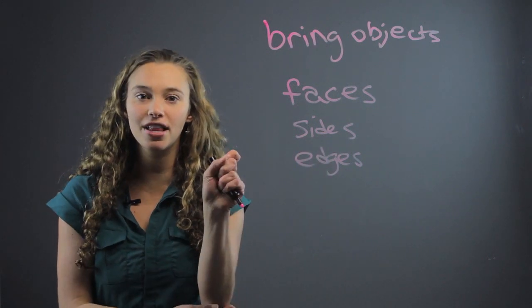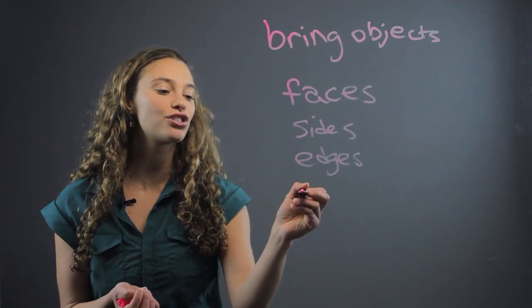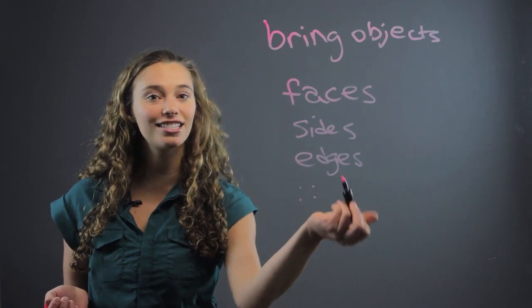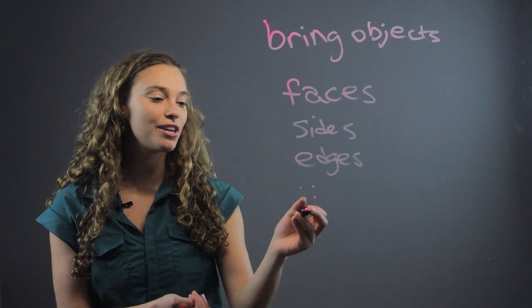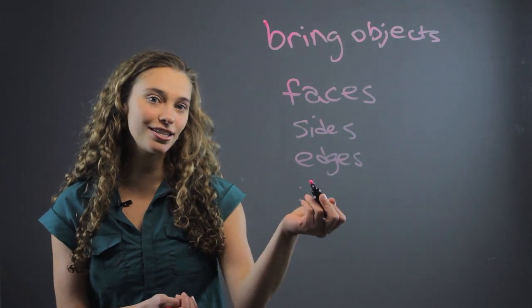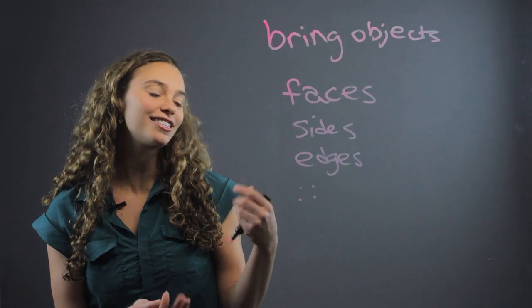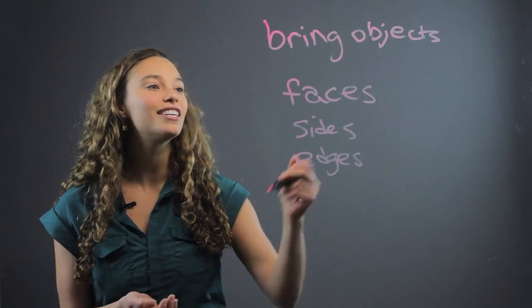But you can even use something as simple as dice to show - you can count the edges of the dice, the sides, the faces. A dice obviously has six faces because there's six numbers on the dice, so that's like a fun object that you can do,